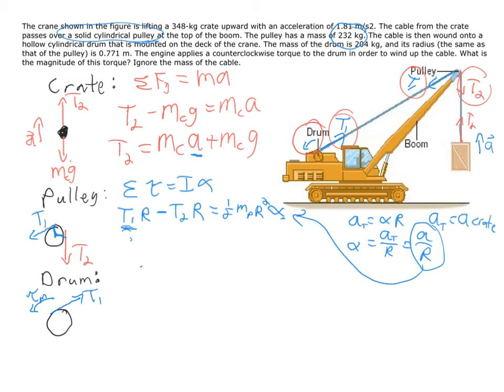For the drum, you're again going to do the same process you did for the pulley: look at the sum of the torque equals I times alpha. But now there's going to be an unknown positive torque—the torque of the motor, which is what you're trying to find—minus the torque caused by tension 1, which is going to be T1 times R. And this is the radius for the drum, which is the same as that of the pulley. But if these were different sizes, you'd need different radius values that correspond to the object you're looking at.